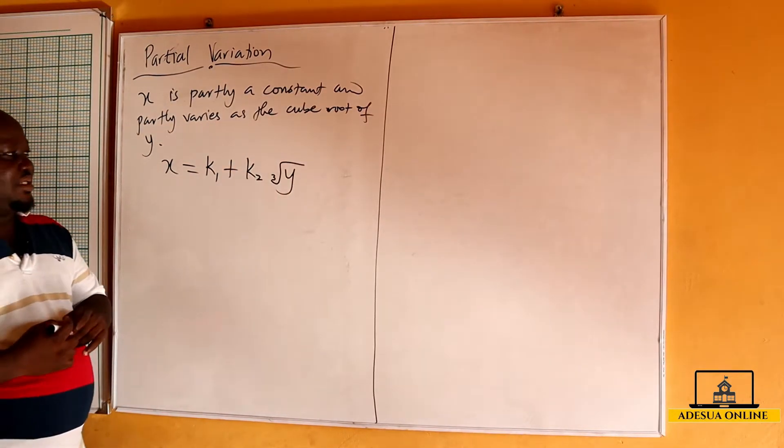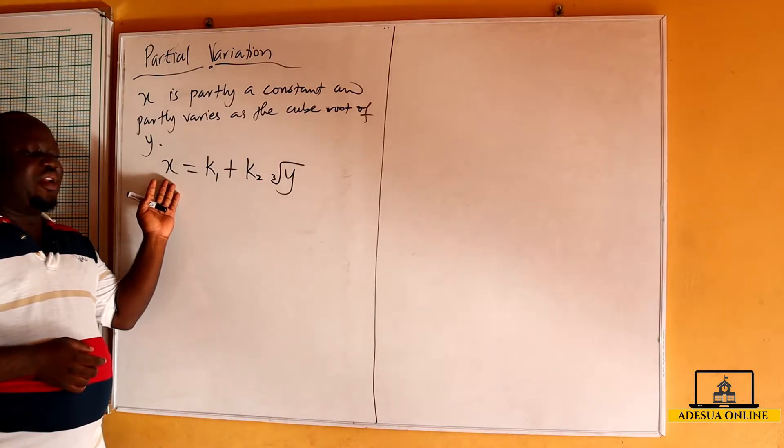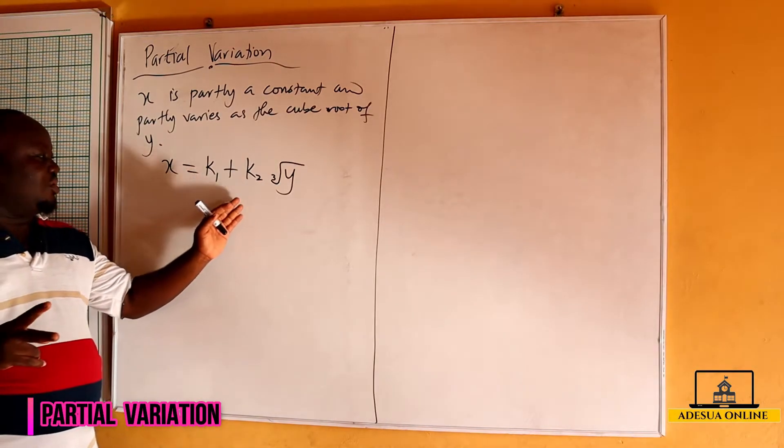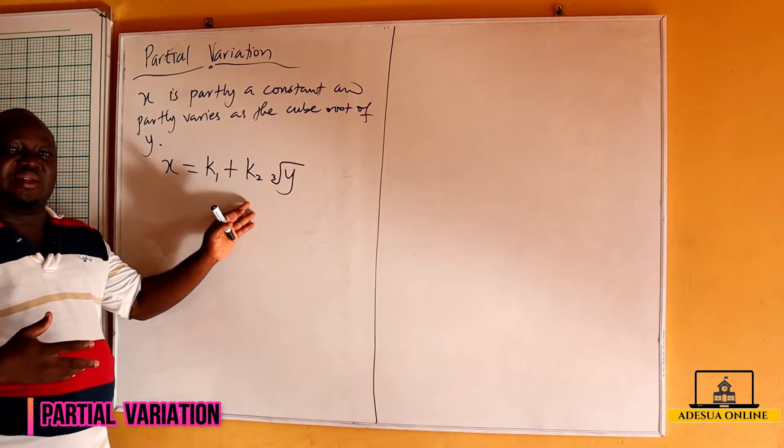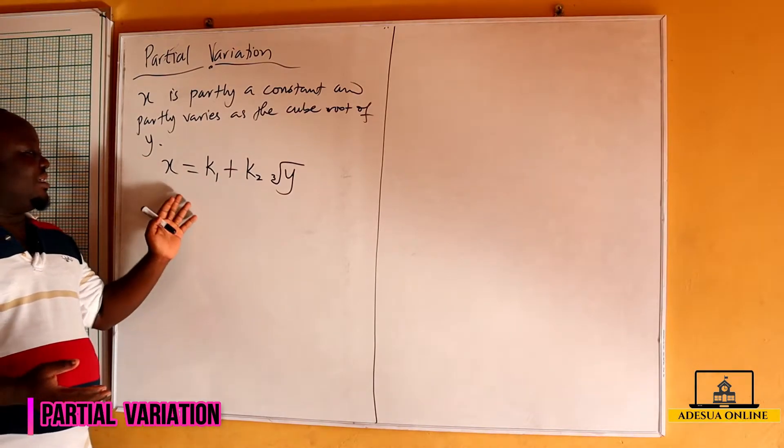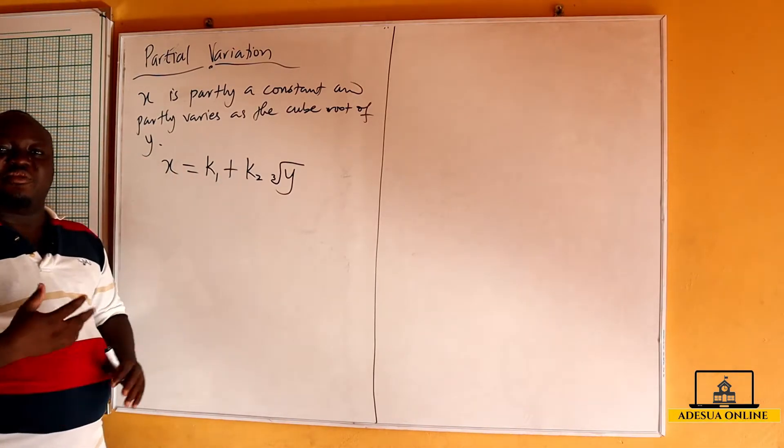Now what happens here is I'm going to be given values of x and y twice. So they'll tell me when x is this, y is this, and when x is this, y is this. So I just insert them, solve them simultaneously.